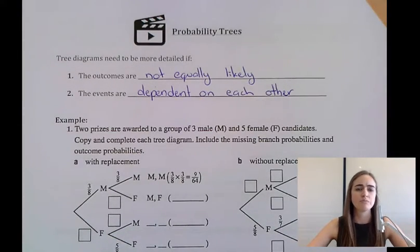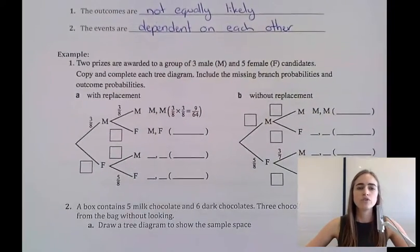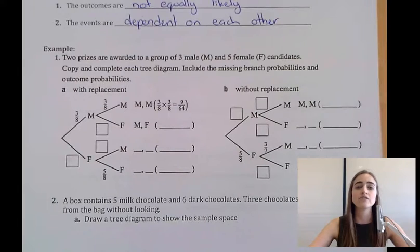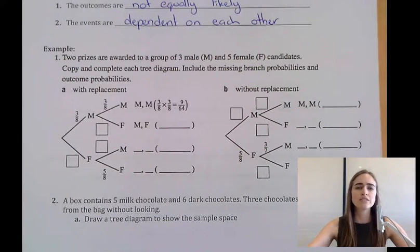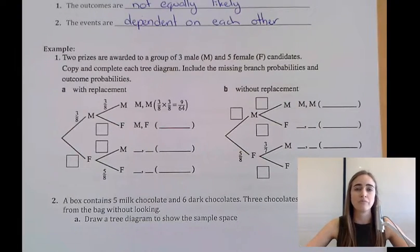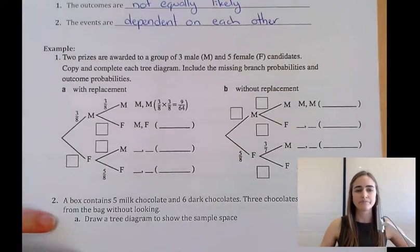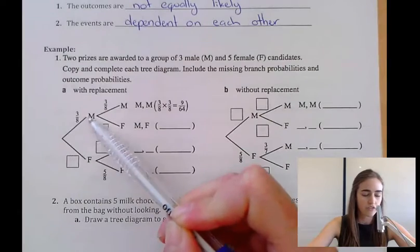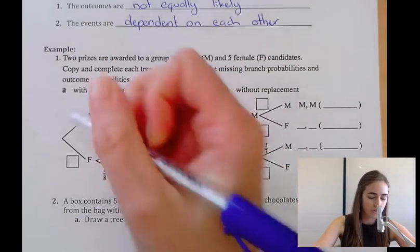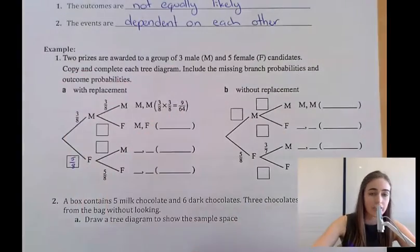Let's look at an example. We have 2 prizes awarded to a group of 3 male and 5 female candidates. We need to complete the tree diagram and include the missing branch probabilities and outcomes. There are 3 males and 5 females, so choosing a male has a 3 in 8 chance and a female has a 5 in 8 chance — they're not equally likely. This first tree is with replacement, so we have 3/8 for males and 5/8 for females at the first choice.